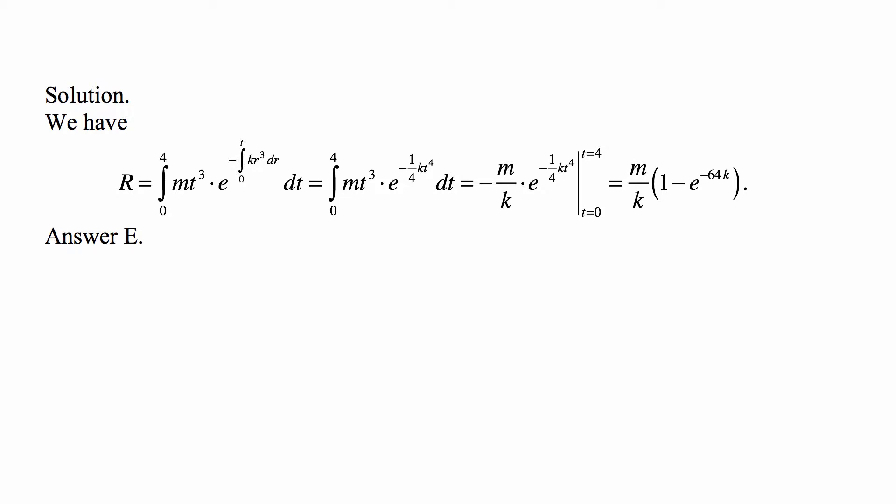The derivative of the exponential is that exponential, but the exponent here has a derivative of negative one-fourth times k times 4t³. The exponential in the derivative remains as it is, but the derivative would have this minus k. So if we put minus 1 over k, that will cancel it out.